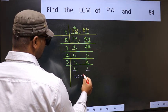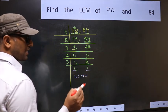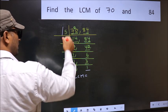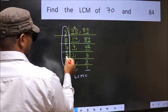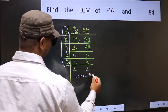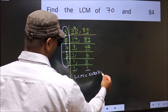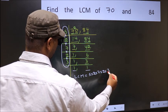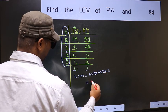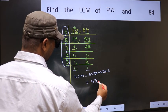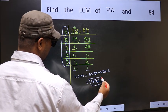So our LCM is, LCM is the product of these numbers. That is 5 into 2 into 7 into 2 into 3. When we multiply these numbers we get 420 is our LCM.